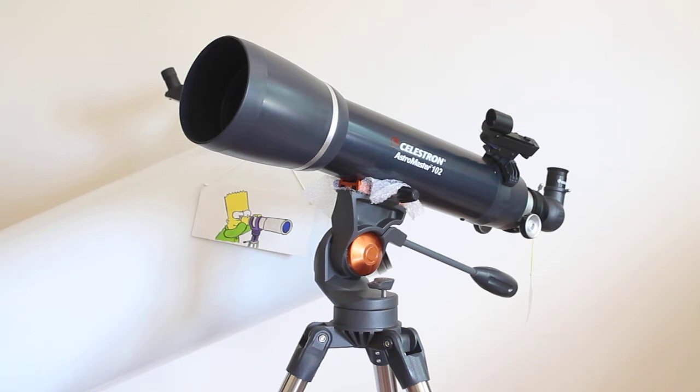This includes some of the reflectors, the Newtonian reflectors, that come with an erect image eyepiece. Personally, I'm not a big fan of them—that's just me, you may think differently—because I always thought that these EQ mount reflectors are fine for astronomy, but using them with an erect image eyepiece...